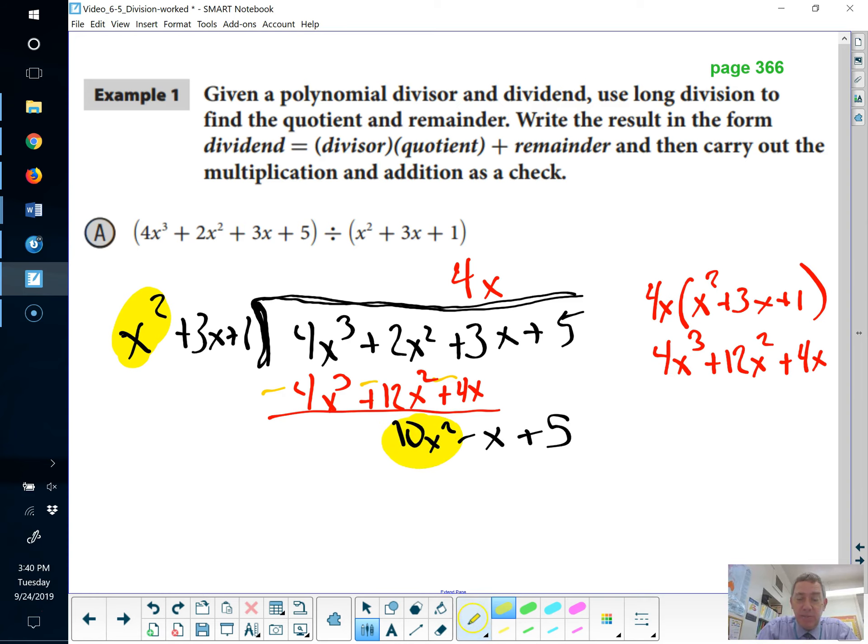I am sorry. That should be minus 10x squared. 2x squared minus 12x squared is minus 10x squared. So, how many times does x squared go into minus 10x squared? The answer, of course, is minus 10.